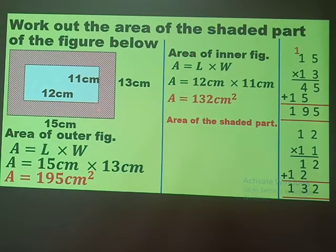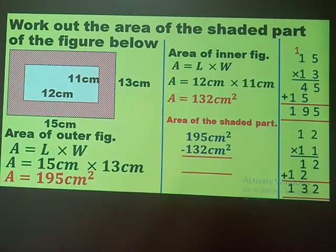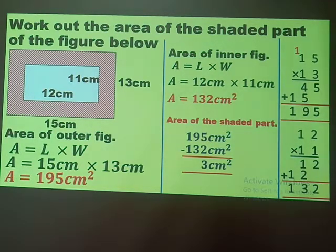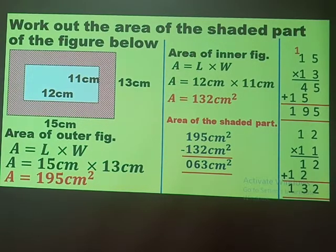Now I have the area of the outer figure and the area of the inner figure. The operation needed to get the remaining shaded area is subtraction: area of outer figure take away area of inner figure. Five take away two gives three, nine take away three gives six, one take away one gives zero — so the final answer is 63 square centimeters. You learned similar work in Primary 5 and P6.